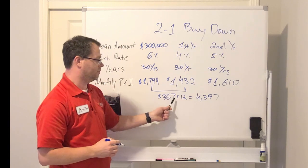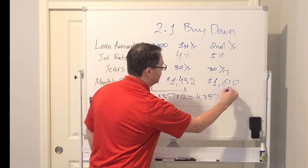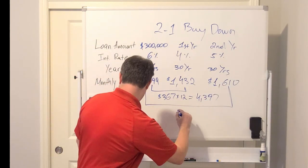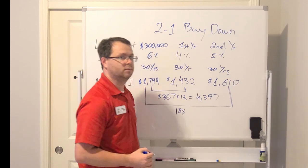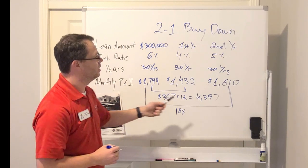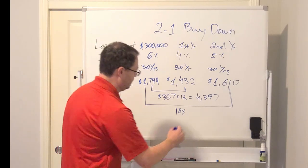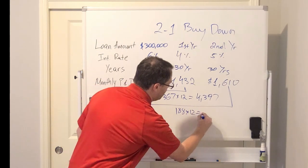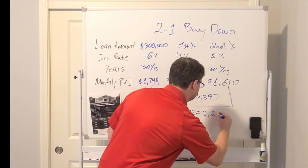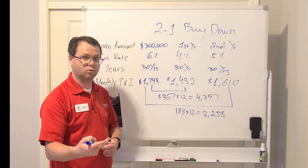If we take a look at the second year difference, we have a difference of $188. You are supposed to be paying $1,799 but you are paying $1,610. The difference is $188. Times 12, we have $2,258 difference for the second 12 months.